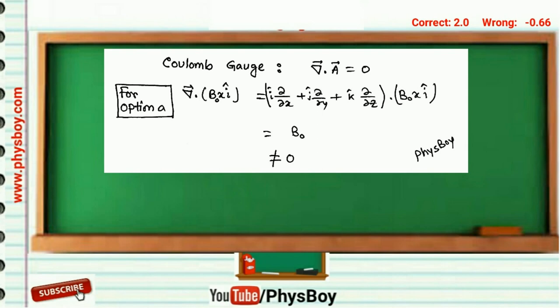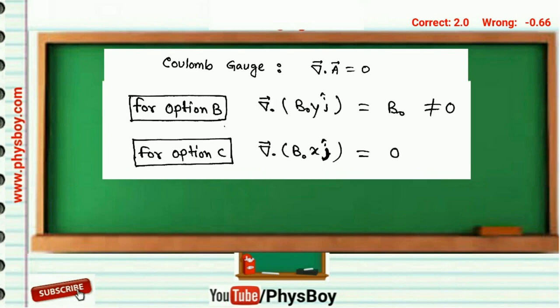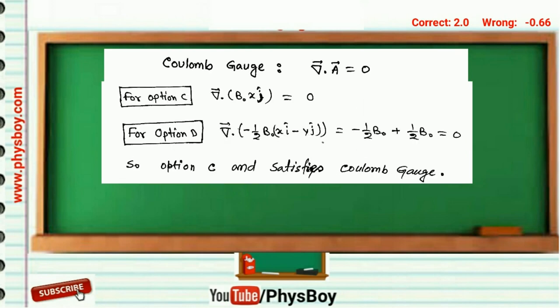First, you have to check which vector potential satisfies this relation. For option A, divergence of A is not equal to zero. For option B, divergence of A is also not equal to zero. For option C, divergence of A is equal to zero, and for option D, divergence of A is also zero.